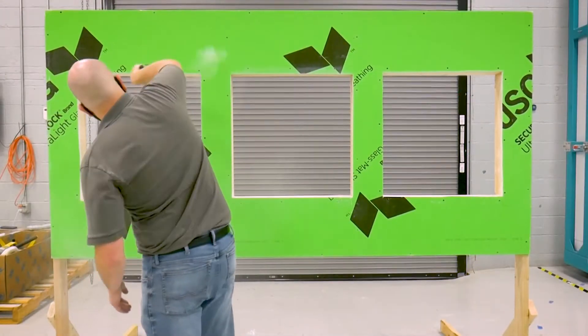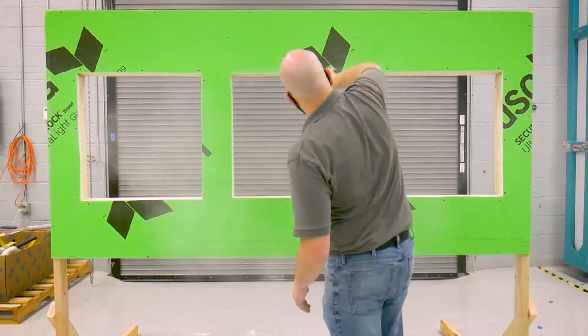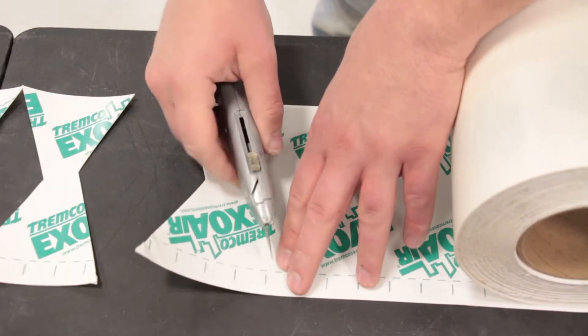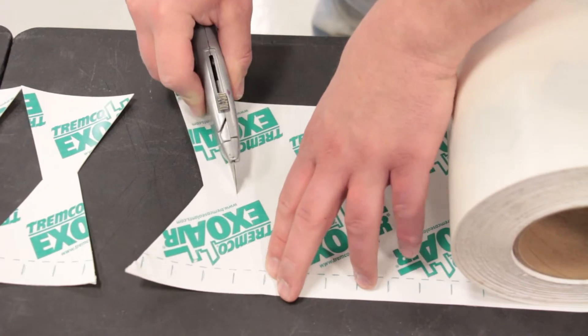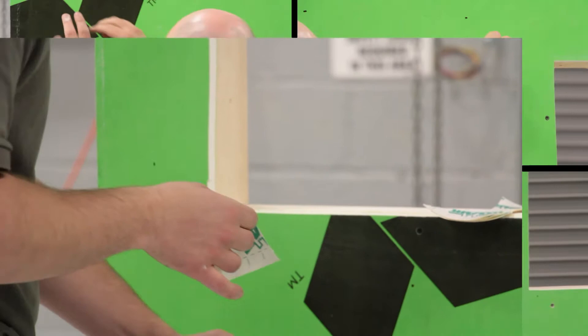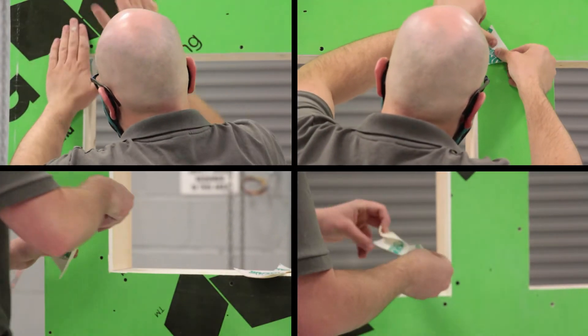Begin by properly cleaning the substrate and ensuring that it is dry and clear of any debris. Start by detailing the corners by cutting out footballs or bow ties of ExoAir 110AT. Peel back the release liner and install at all four corners, using a roller to roll out any air bubbles or fish mouths.